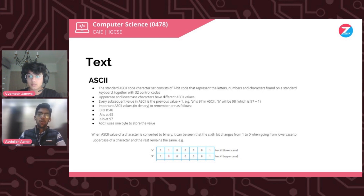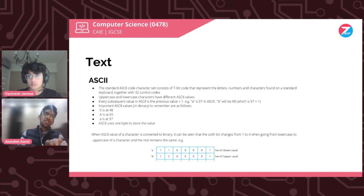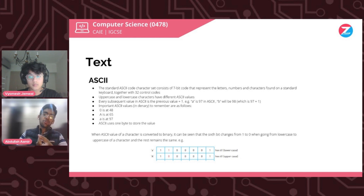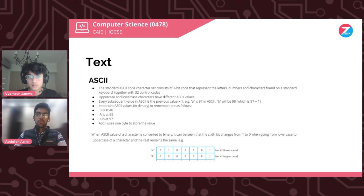In the exam you just need to memorize some key values. For example, 0 is at 48, so 1 is 49, 2 is 50, 3 is 51, 4 is 52, and so on. Capital A is 65, and lowercase a is 97. You can memorize these and count from there. Also keep in mind that as a 7-bit code, ASCII uses only one byte to store each value.